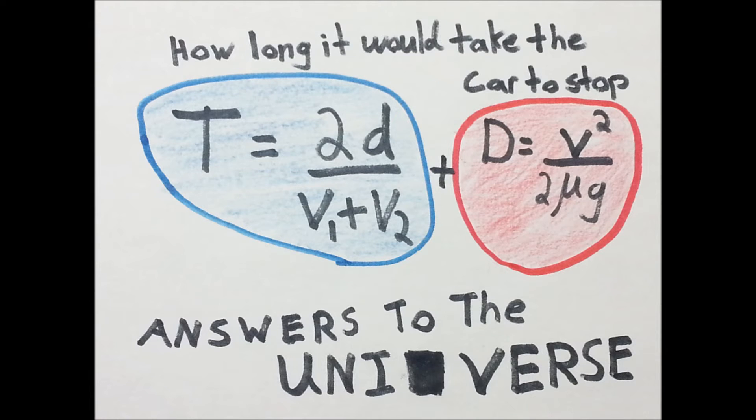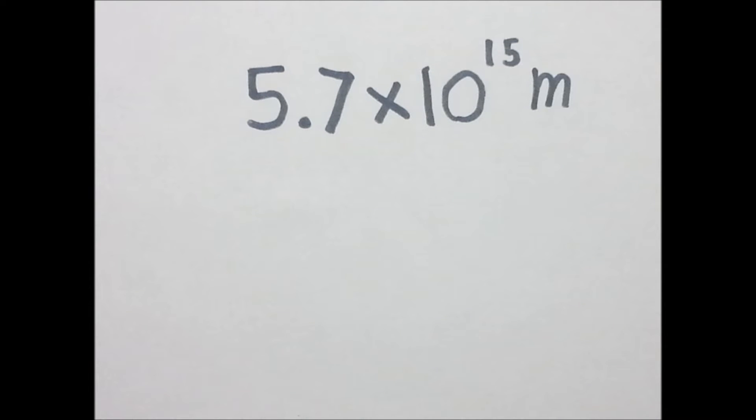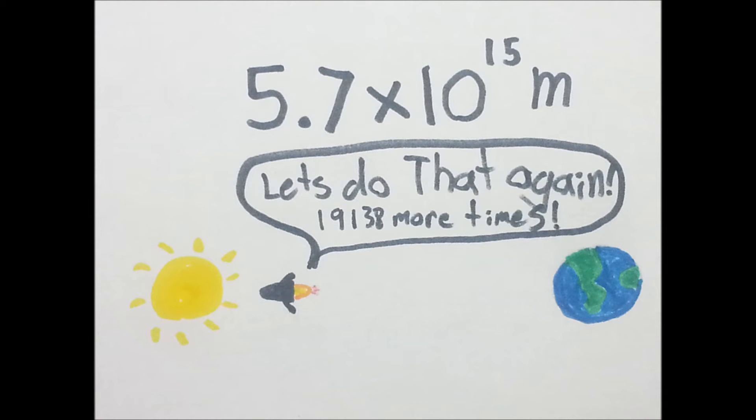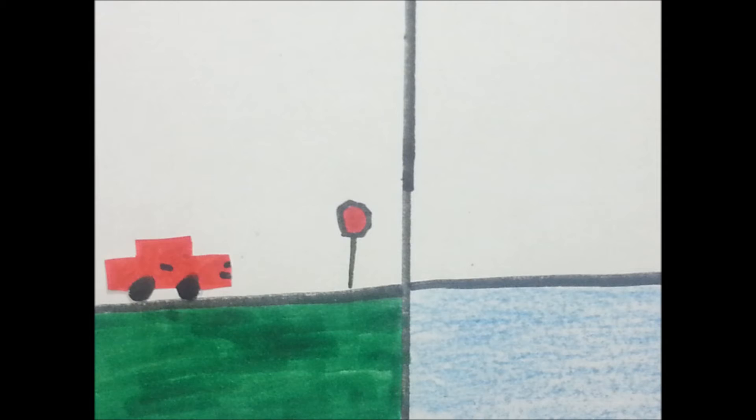we figured out it would slide about 5.7 quadrillion meters, or about 19,138 trips to the Sun and back. We also figured out the trip would take about 442 days.